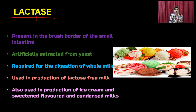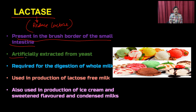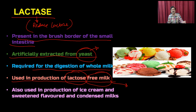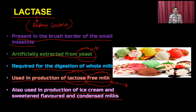Lactase reduces lactose in food products. It is present in the brush border of the small intestine and is artificially extracted from yeast. It is required for the digestion of whole milk and is used in the production of lactose-free milk — a very large market in the US and other countries, since many people have lactose intolerance. It is also used in the production of ice cream and sweetened, flavored, and condensed milk.